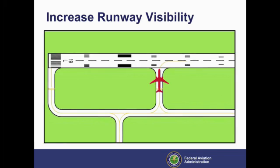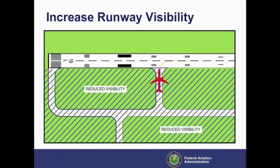A right angle turn, as shown here, provides the pilot with the best visibility. A right angle turn at the end of a parallel taxiway is a clear indication to a pilot that he or she is approaching a runway.